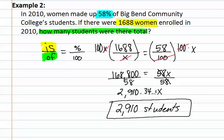Remember that when doing general applications, you need to identify the 'of' or the whole, and the 'is' or the part in the word problem. You then can proceed to set up a proportion. After the proportion is set up, you can proceed to solve.